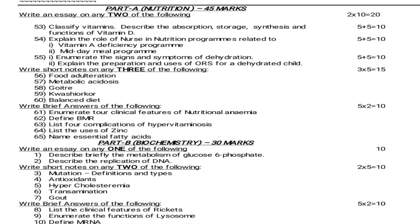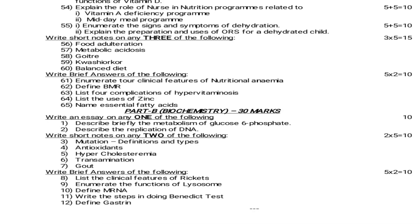Moving on to Biochemistry for June 2014 — 30 marks. Essay questions: Describe briefly the metabolism of glucose-6-phosphate. Describe the replication of DNA. Short notes — 5 marks: Mutation, definition and types. Antioxidants. Hypercholesteremia. Transamination. Gout. Brief answers — 2 marks: List the clinical features of rickets. Enumerate the functions of lysosome. Define mRNA. Write the steps in doing Benedict test. Define gastrin.